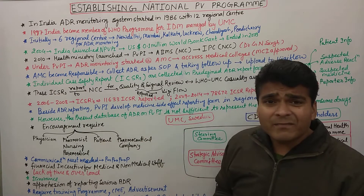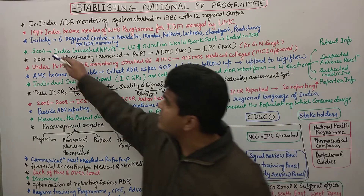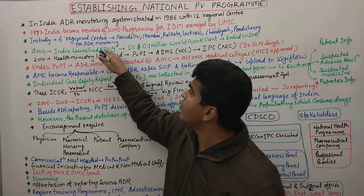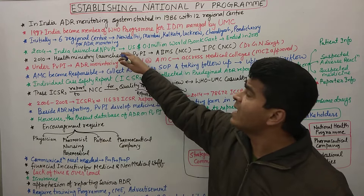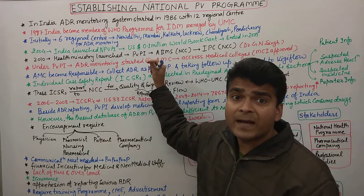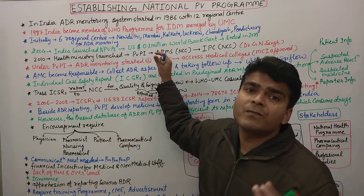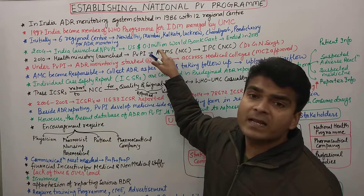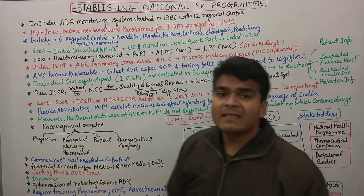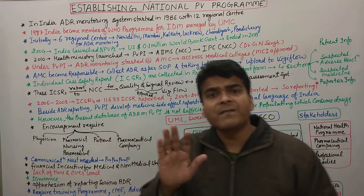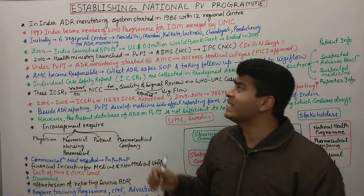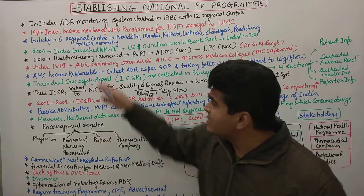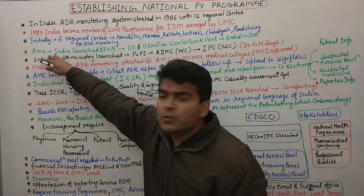In 2004, India launched a National Pharmacovigilance Program with the help of the World Bank, which provided 0.1 million dollars. This program ran for five years and ended in 2009, during which some progress was made.